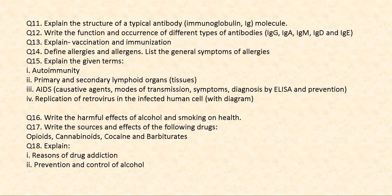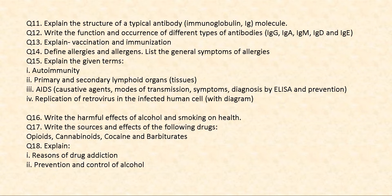Read about vaccination and immunization — mainly their definitions. Then what do you mean by allergies and allergens, and the general symptoms of allergies. Explain the terms autoimmunity and primary and secondary lymphoid organs or tissues. For AIDS: its causative agents, modes of transmission, symptoms, diagnosis — mainly by ELISA — and its prevention protocol. Study the replication of retrovirus in the infected human cell with a diagram. Then the harmful effects of alcohol and smoking on health, and the sources and effects of drugs like opioids, cannabinoids, cocaine, and barbiturates, including reasons for drug addiction and prevention and control of alcohol.